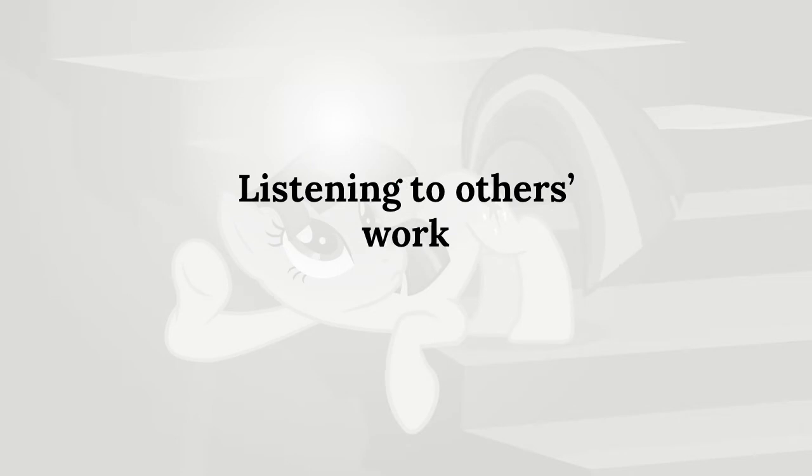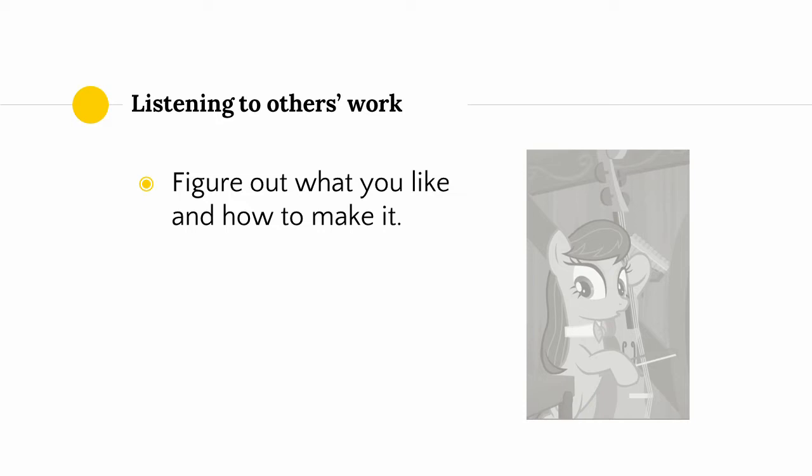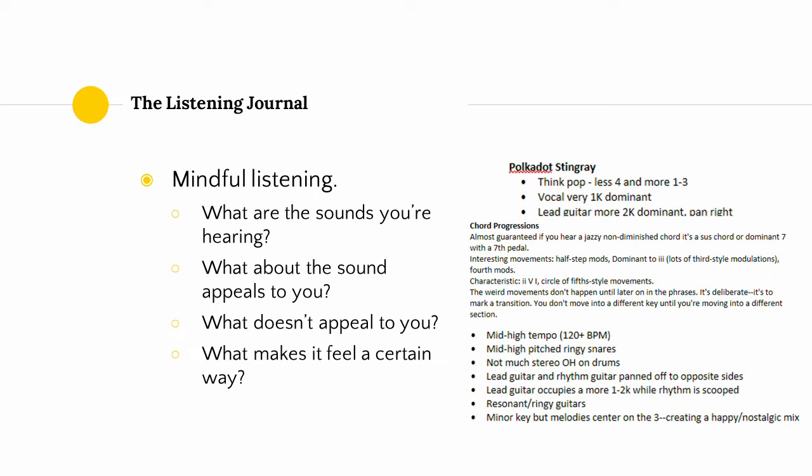Now let's talk about listening to other people's music. Again, as mentioned in the research section, this is all about figuring out the things that you like and figuring out how to make the things that you like. We're going to talk about the listening journal. For beginners, this is a method for mindfully listening to music — you just need to take notes while you listen, or at least think about these questions: What are the sounds that you're hearing? What are the instruments used? What about the sound or song appeals to you? What doesn't appeal to you? What do you want to avoid? What makes a song feel the way it does? What makes it sound unique, exciting, or creative? These are things you can pick up in your listening journal and try to incorporate into your own music.